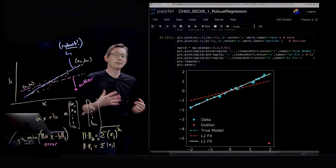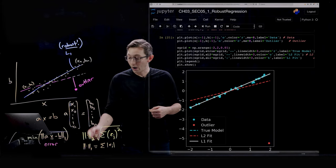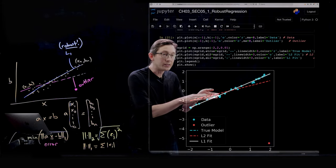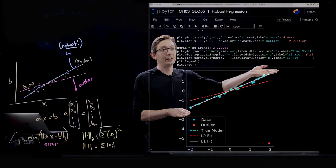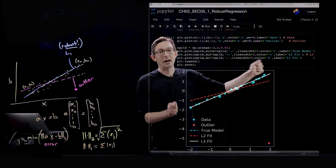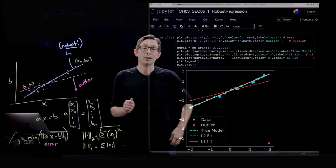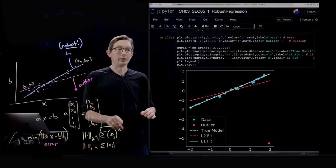Beautiful. So now when I minimize the one norm of the error instead of the two norm of the error, you see this white curve is our L1 fit. And it is almost perfectly on top of the true model.